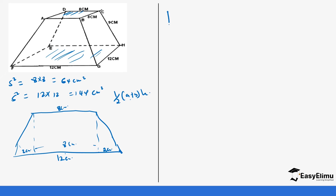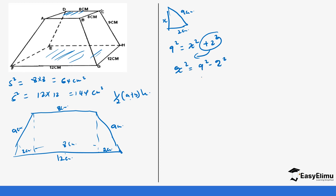This forms a right-angled triangle. Remember this side is 9 centimeters, which means the hypotenuse is 9 centimeters and the base is 2 centimeters. We are looking for the height. Using the Pythagoras theorem: 9 squared equals x squared plus 2 squared. Rearranging, x squared equals 9 squared minus 2 squared, which is 81 minus 4 equals 77. Taking the square root of both sides, x equals the square root of 77, which gives us 8.8.